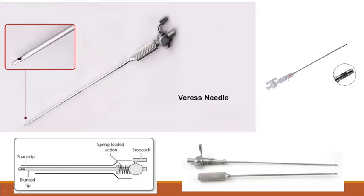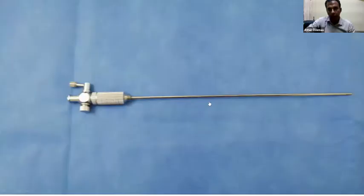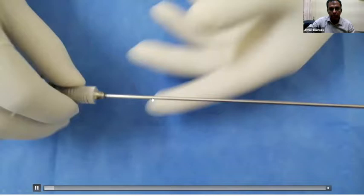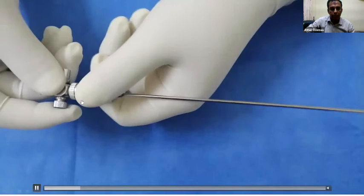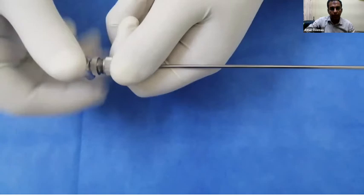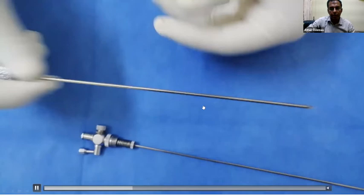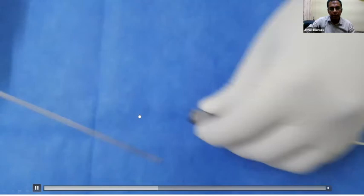The reusable Veress needle is shown here, and the disposable single-use one is shown without an inner stylet. We initially used the disposable ones but now use the reusable ones in our department. Our needle is around 20 centimeters, blunt at the tip, with a lower lock. When opened, the inner stylet comes out revealing the sharp outer cannula, the blunt inner stylet, and the spring.